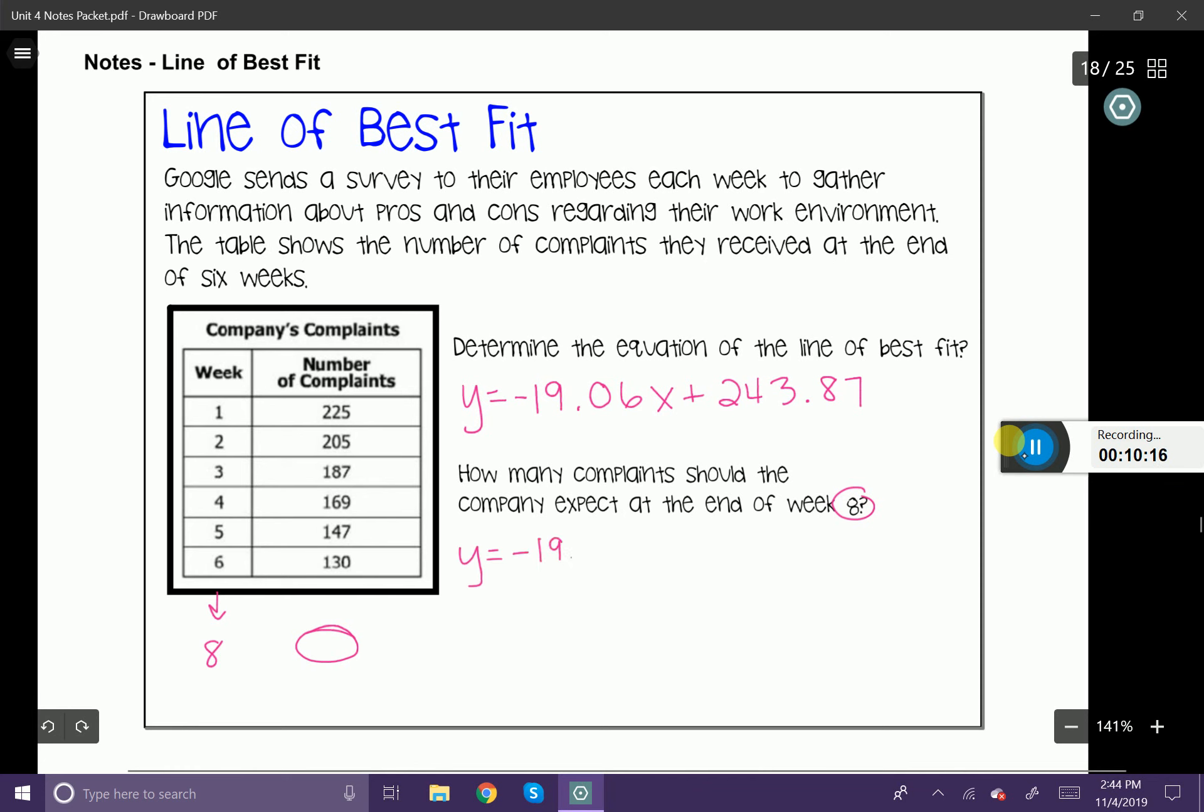So I'm going to place an eight into my x value. And then I'm just going to go ahead and churn out the numbers. So go ahead and use your calculator for this. And it looks like I got about 91 complaints.